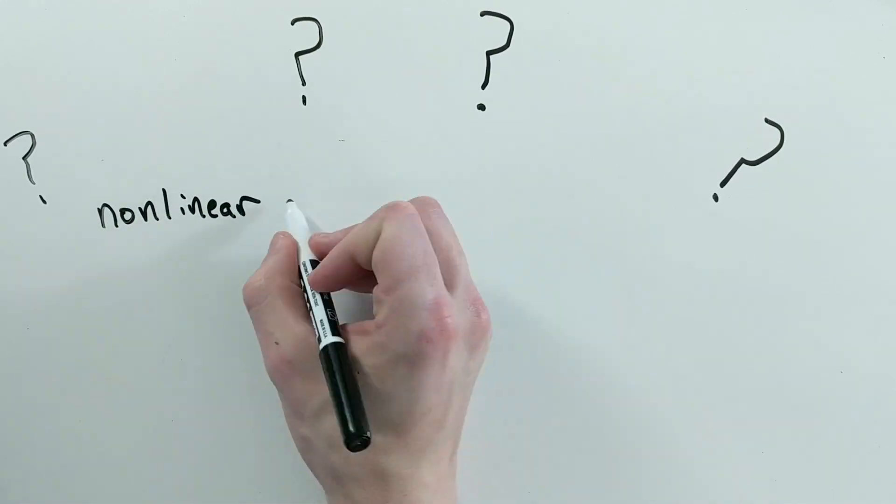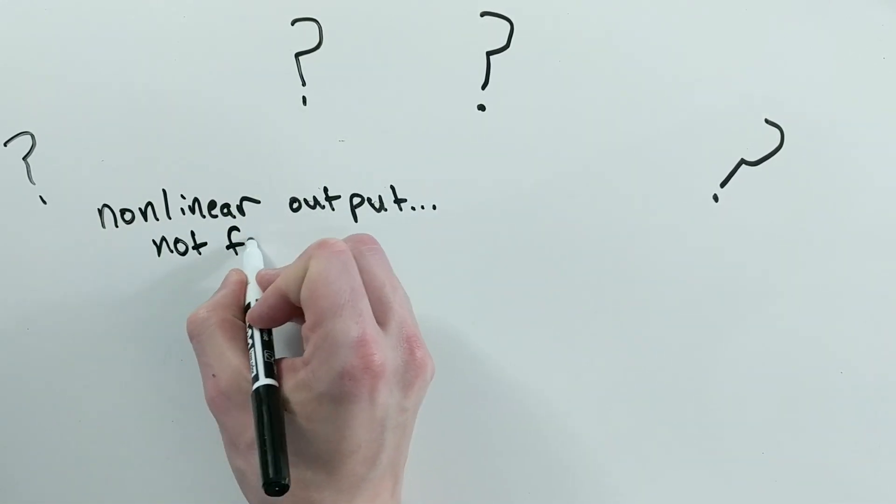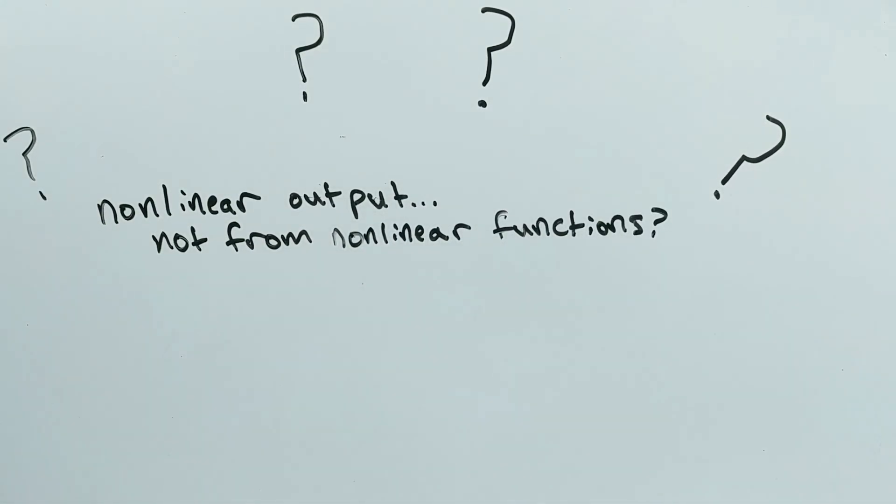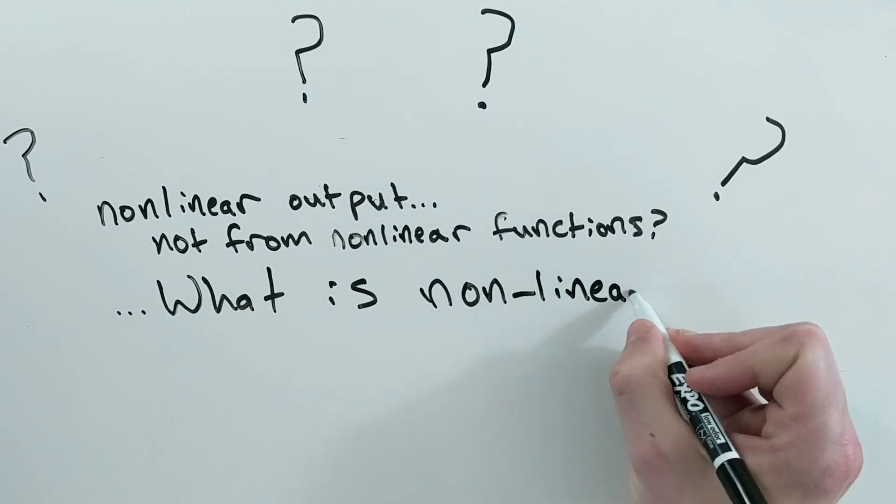You might now be confused. So if the output can be non-linear, but it isn't a non-linear transformation, then what is a non-linear transformation?